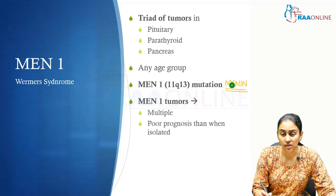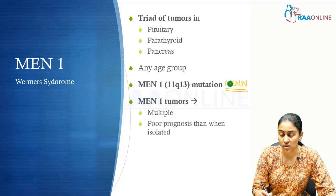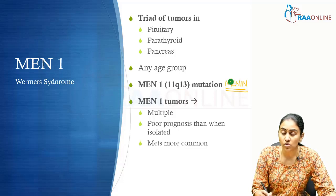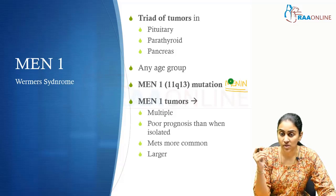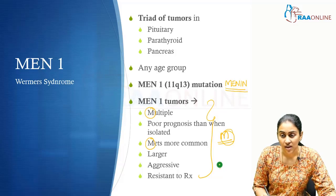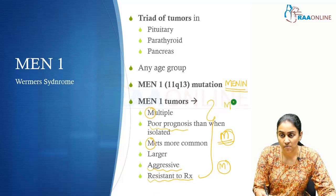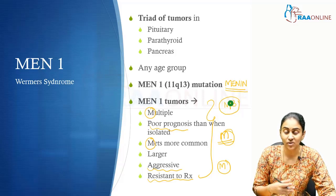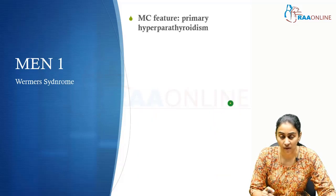MEN 1 tumors are usually multiple and have a poorer prognosis than when isolated. For instance, sporadic parathyroid tumors may have better prognosis than when associated with MEN 1. They are going to be multiple when associated with MEN 1, as opposed to solitary when sporadic, and metastases are more common. Tumors are often larger, aggressive, and resistant to treatment. Remember the three M's associated with MEN 1 tumors: multiple, metastatic disease more common, and highly morbid — reflecting the aggressive nature, difficulty in management, and poor prognosis.